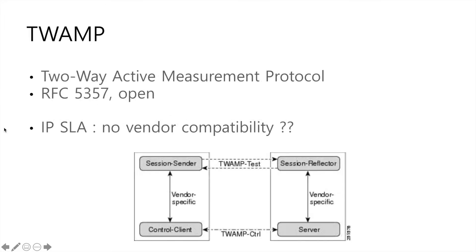TWAMP is the Two-Way Active Measurement Protocol. It's a standard — RFC 5357. If a network device supports TWAMP, you can use it. It's open.